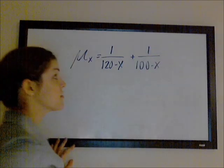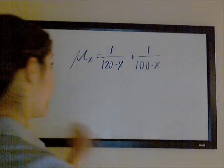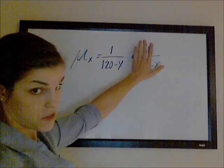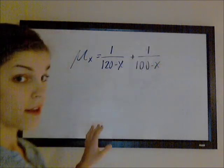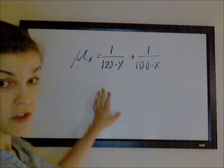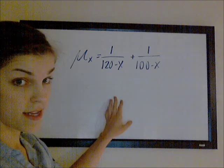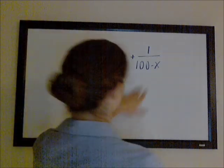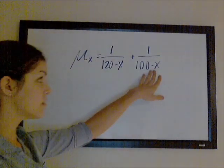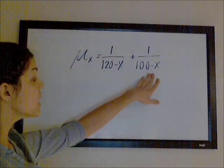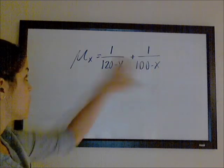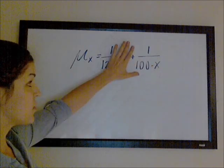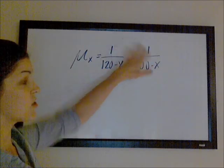You can see right away that this first term by itself would be a de Moivre distribution with limiting age omega equal to 120. And the second term would be the force of mortality for a de Moivre distribution with limiting age 100.